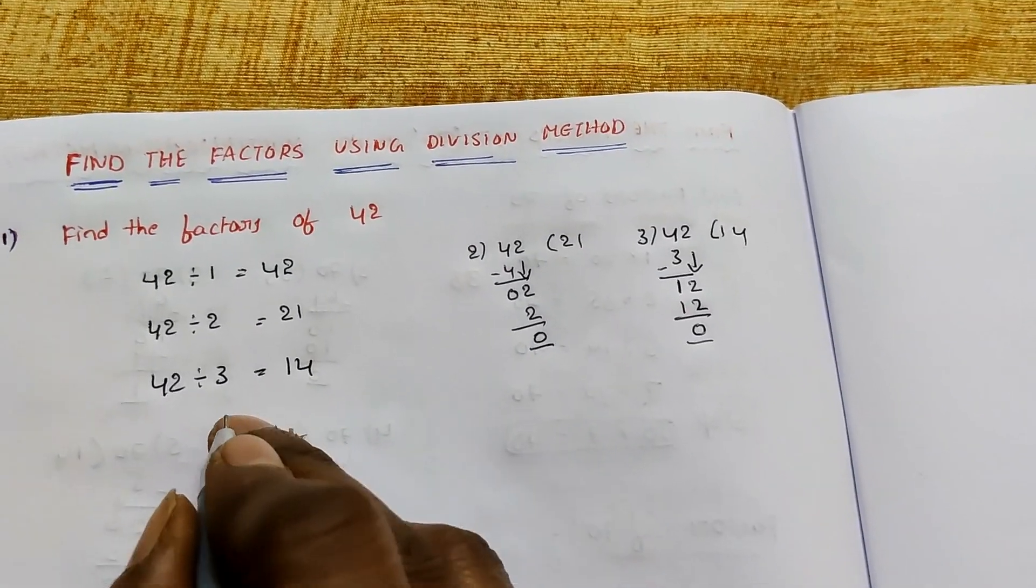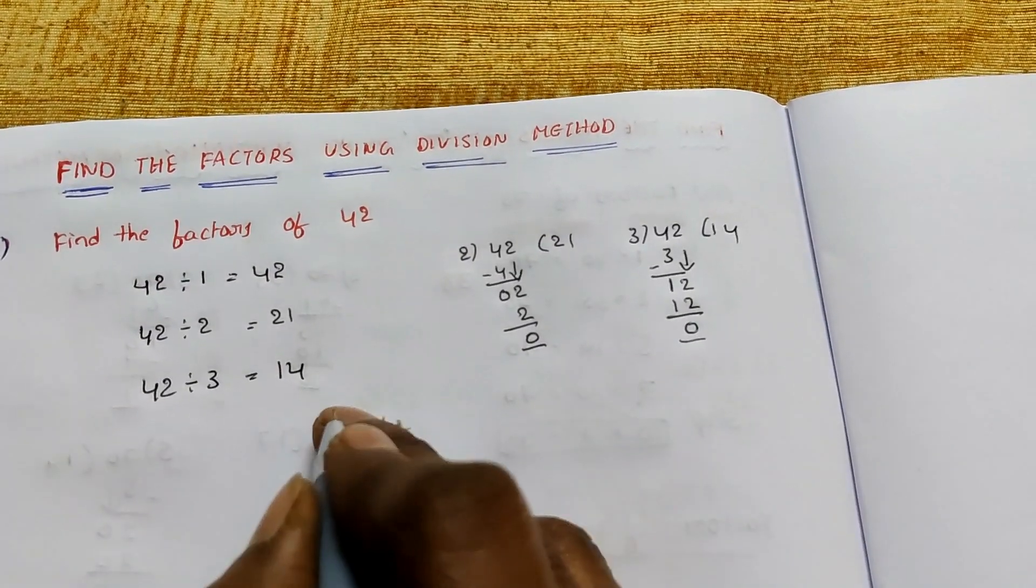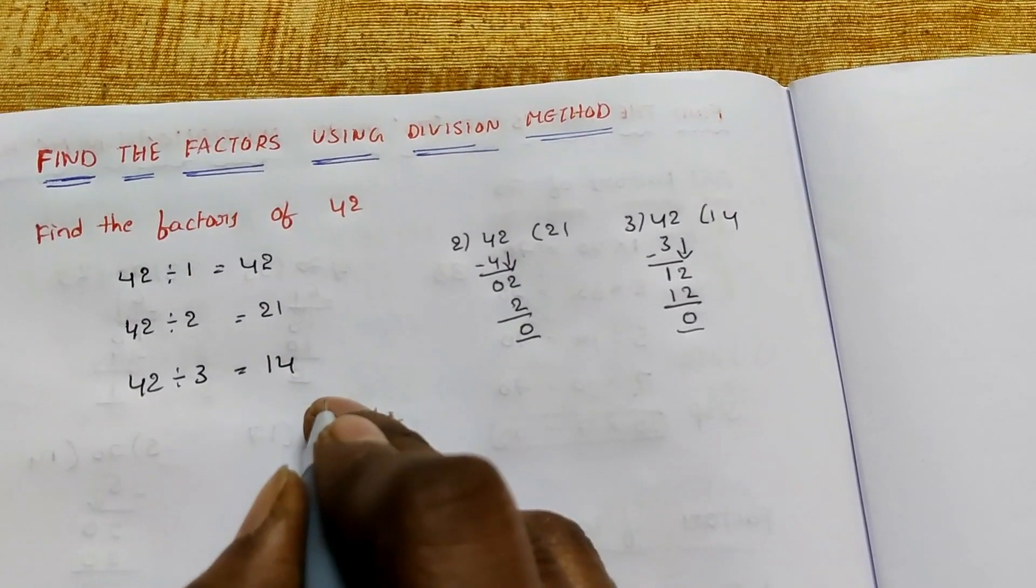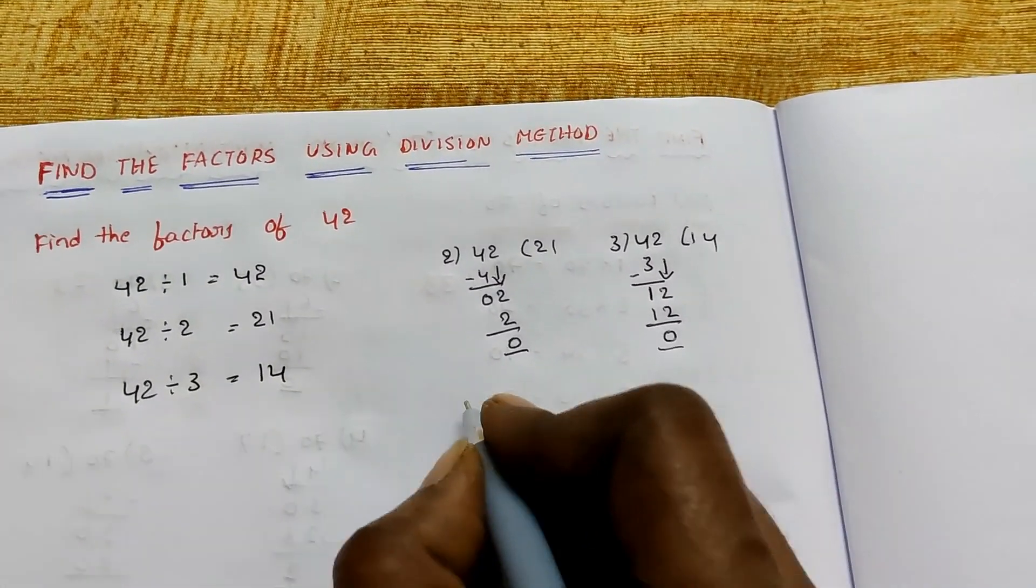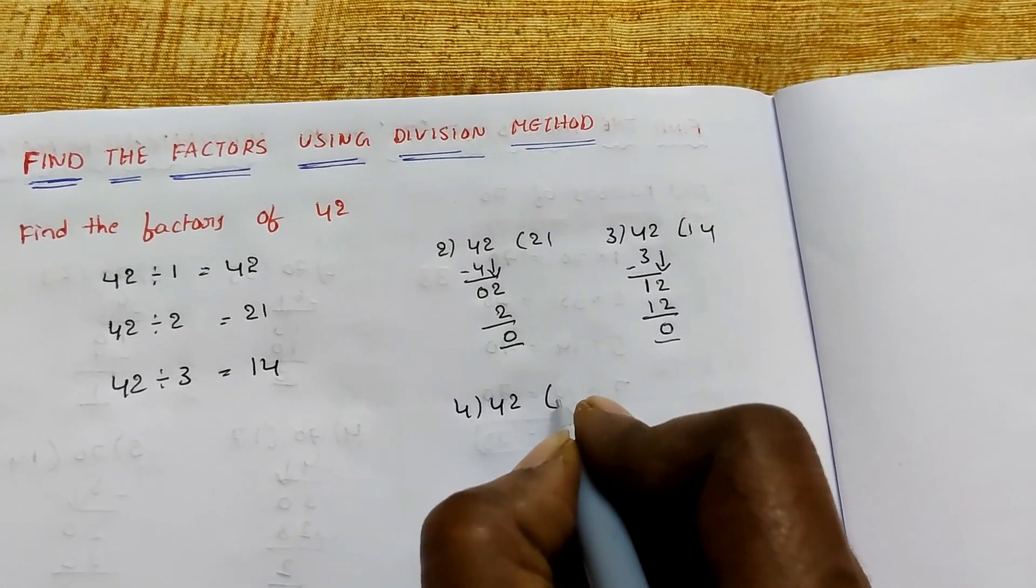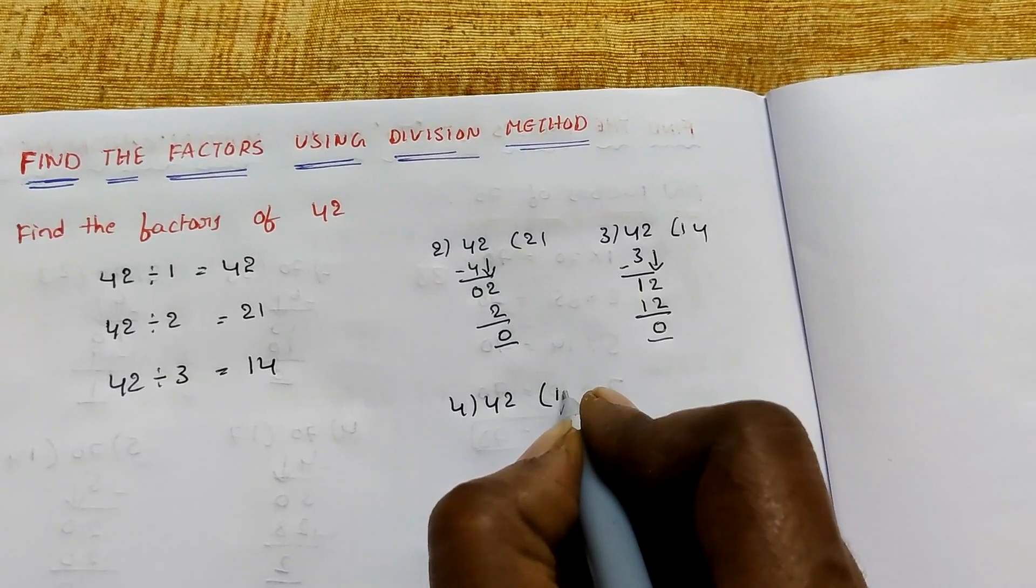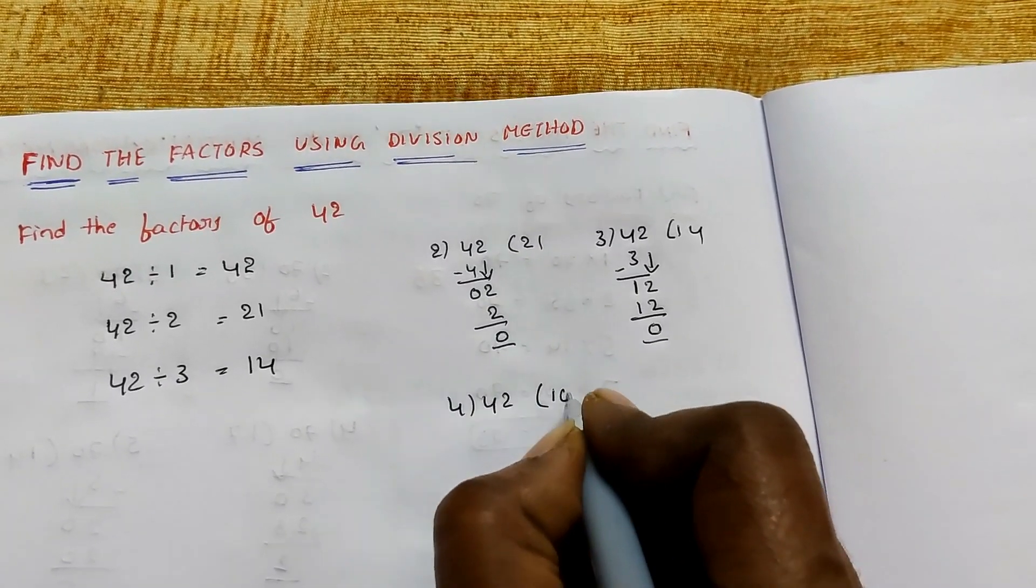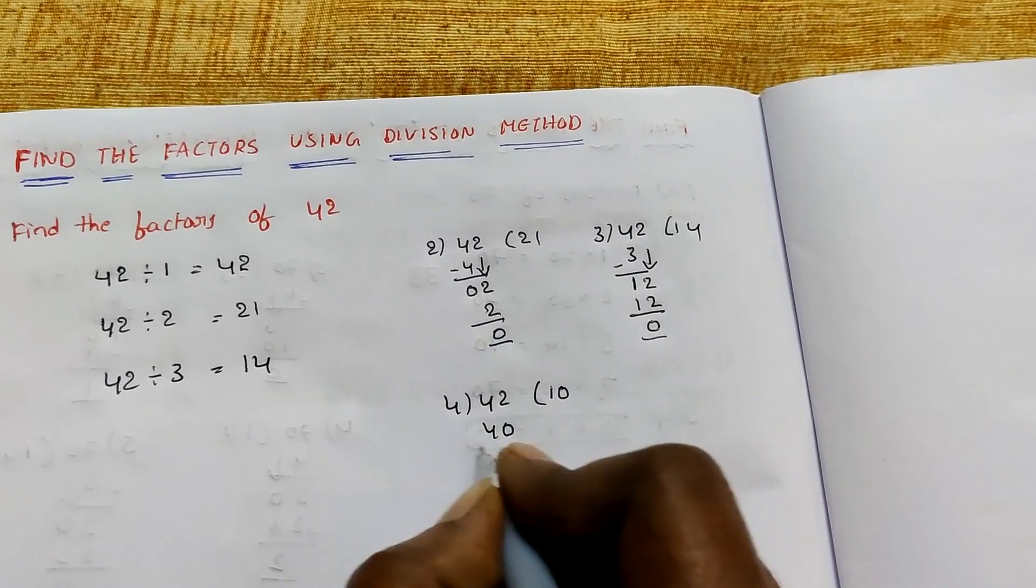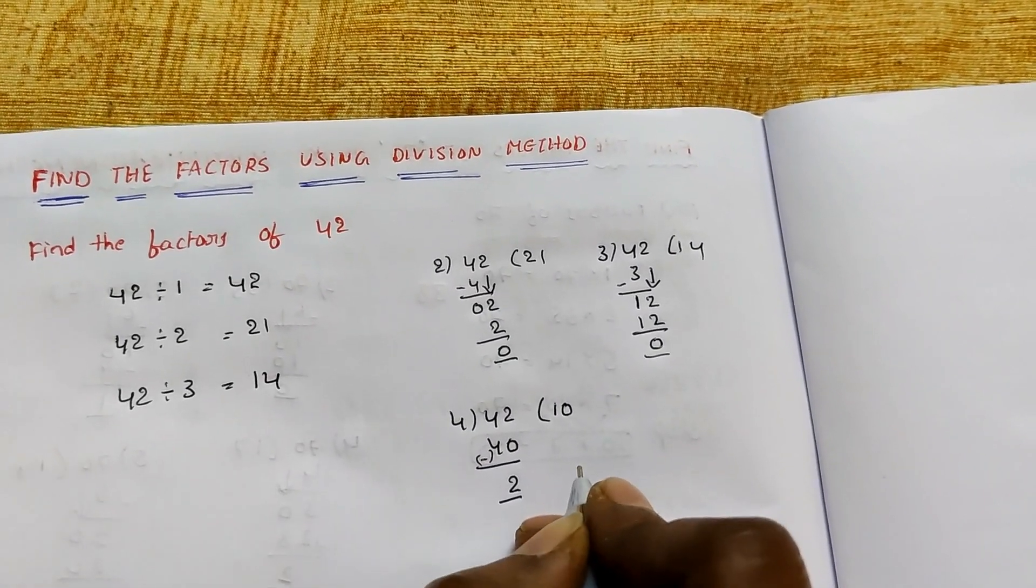And then 1, 2, 3, remainder 0. So next, 4 table. Check: 42 divided by 4. 4 times 10 equals 40, subtract, remainder 2. So 4 is not a factor.